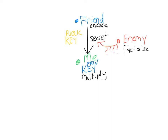In reality, you're dealing with numbers that have hundreds of digits — they are hard to factorize and there's no quick way to do it. We're going to look at an example: we'll take the message 'I love soccer,' encode it, and then decode it. The public key that everyone has access to is going to be the number 437. This number is a semi-prime — the product of two prime numbers — and the reason we use that is because they are hard to factorize.